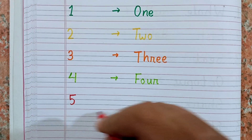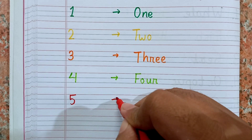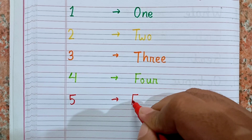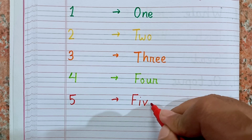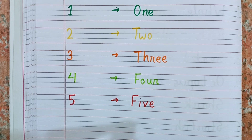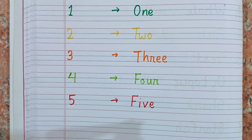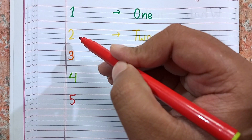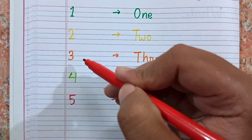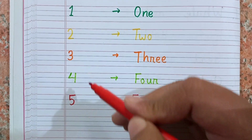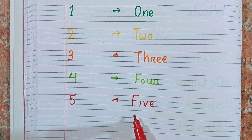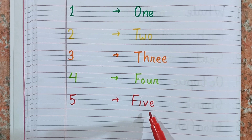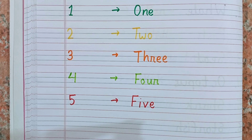Now I am writing 5. This is 5, and the spelling of 5 is F-I-V-E. Again, count with me: 1, 2, 3, 4, and the spelling of 5 is F-I-V-E.